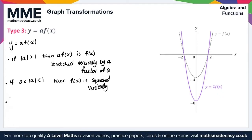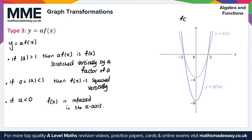And finally, if a is less than 0, then f of x is also reflected in the x-axis. In this example, f of x equals x squared minus 4, and we have y equals 2f of x. This is a vertical stretch, so we multiply the y-coordinates of f of x by 2 to get y equals 2f of x. That gives us everything we need for Type 3.